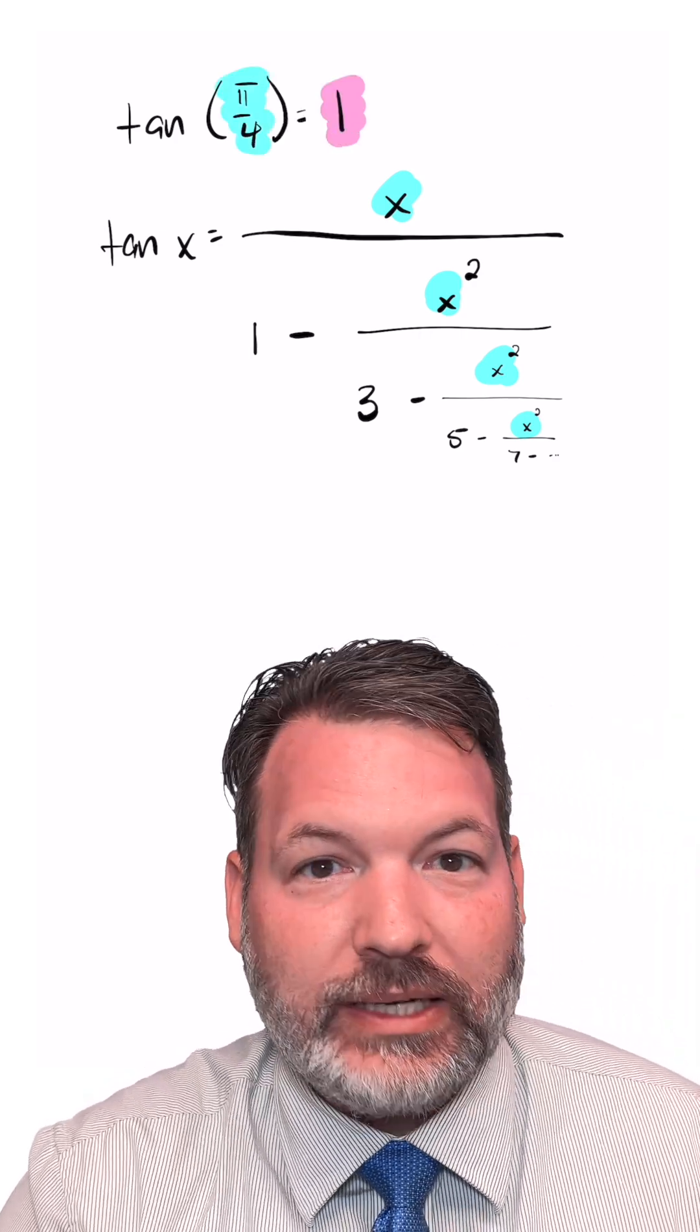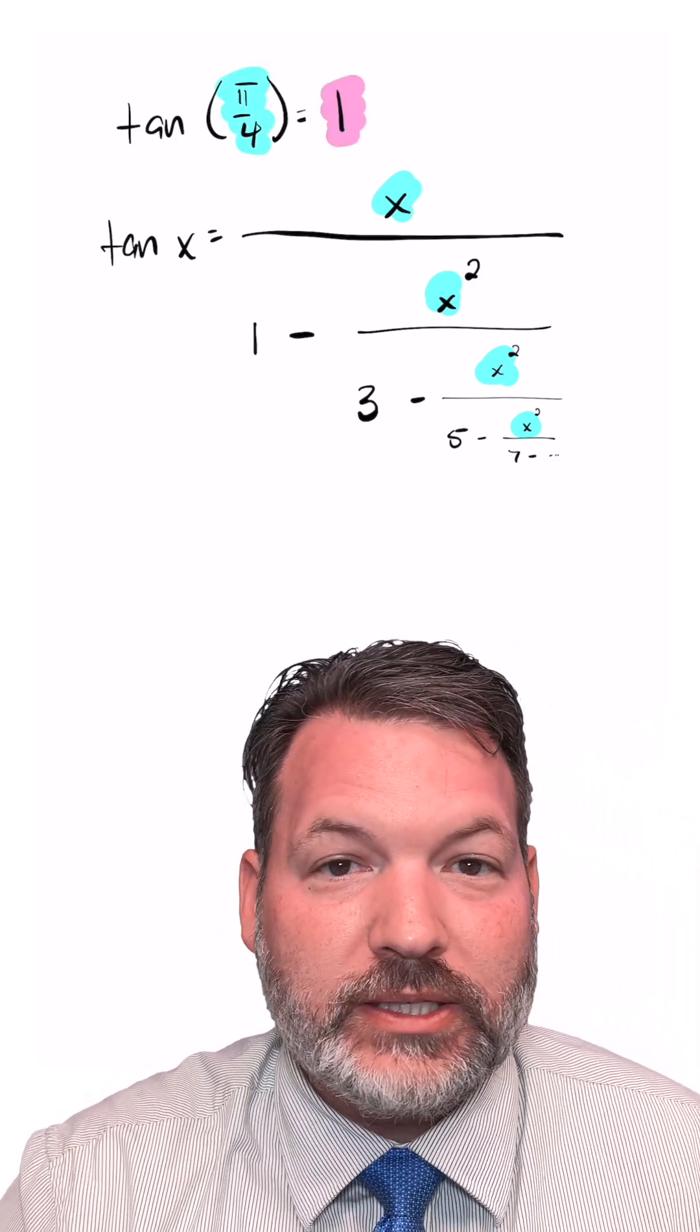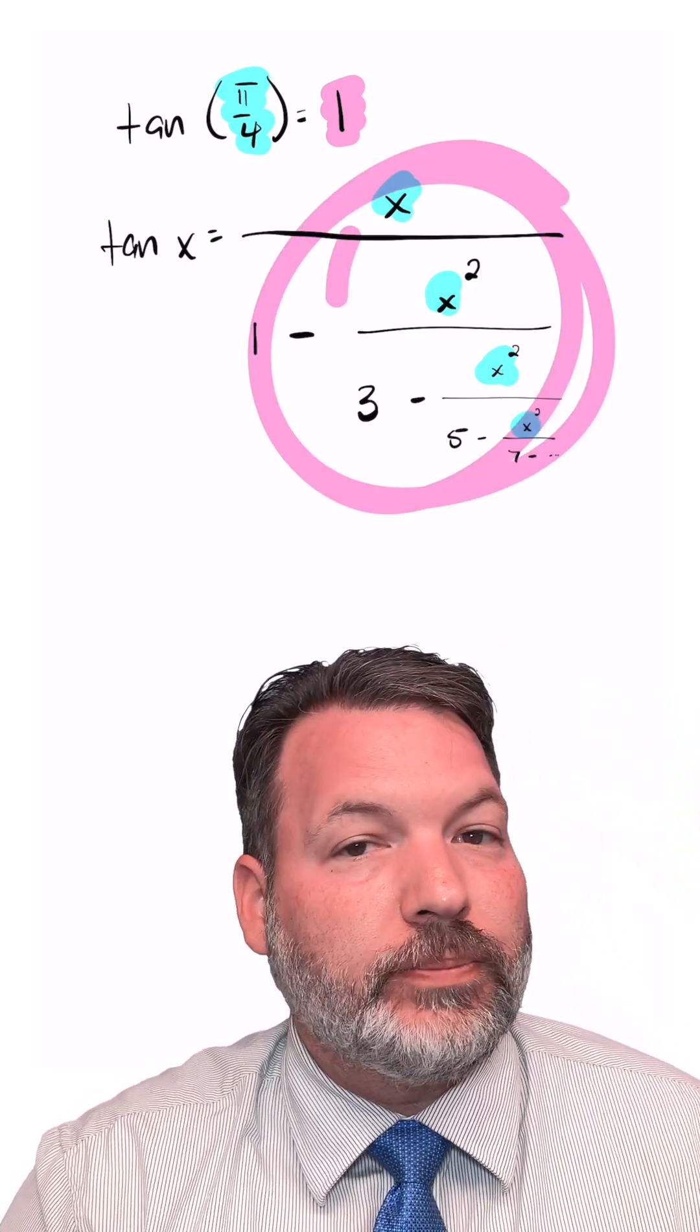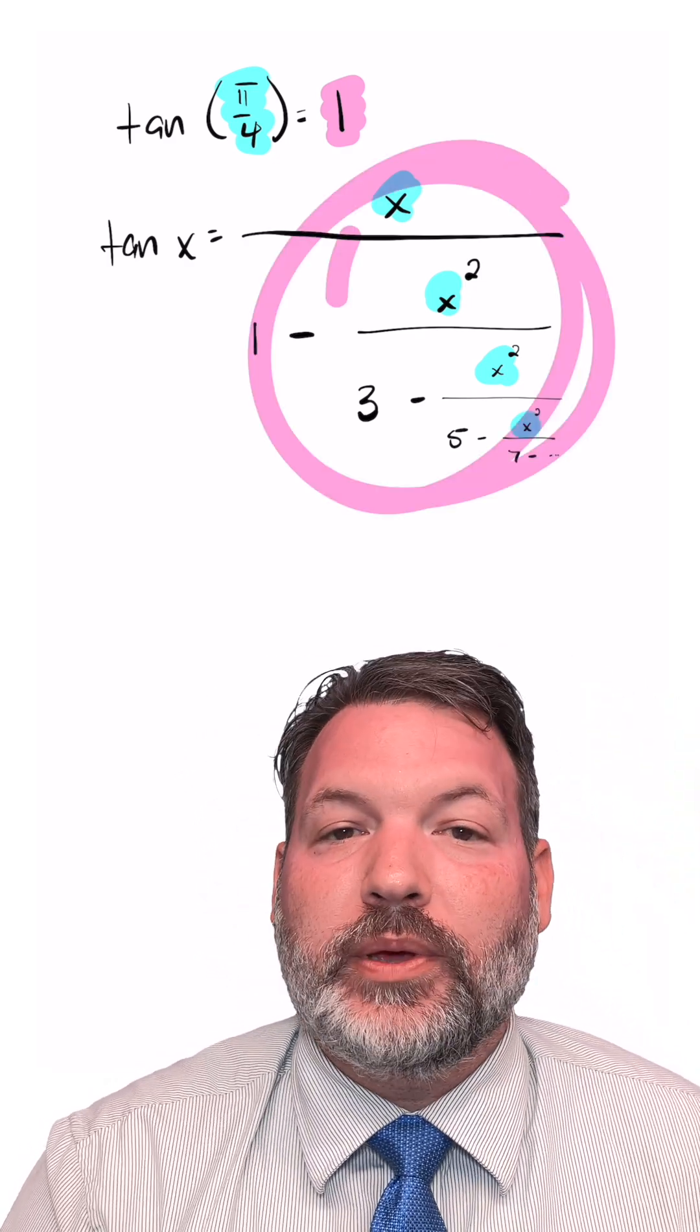our result is not irrational. 1 for sure is not an irrational number. What that meant was that the input we used to produce that result can't have been rational.